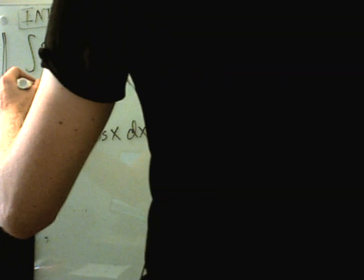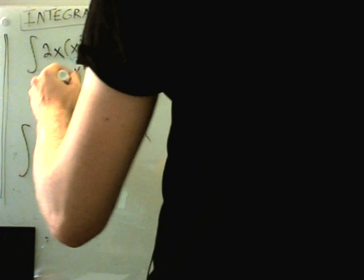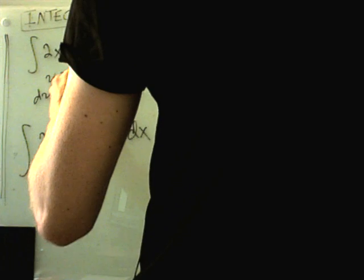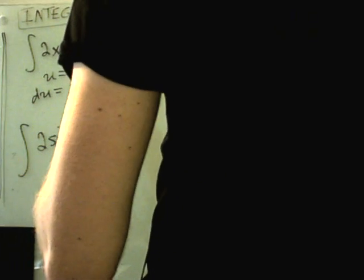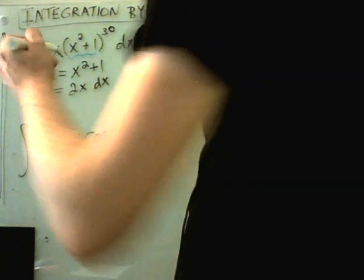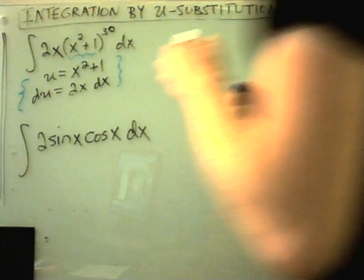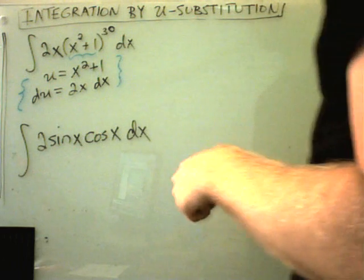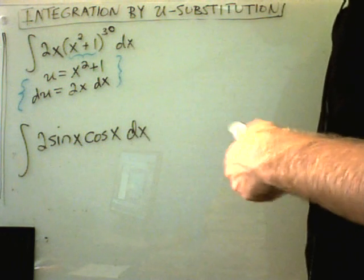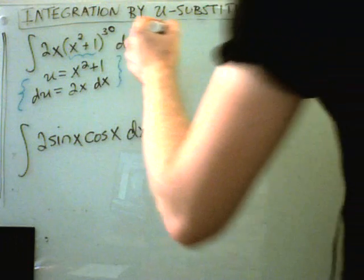From this, I calculate du. Well, du is going to be 2x, and then we tack on a dx. And the idea is we try to use this stuff, our u and our du, to relabel the original integral and make it basically back into one of the more fundamental antiderivative formulas.